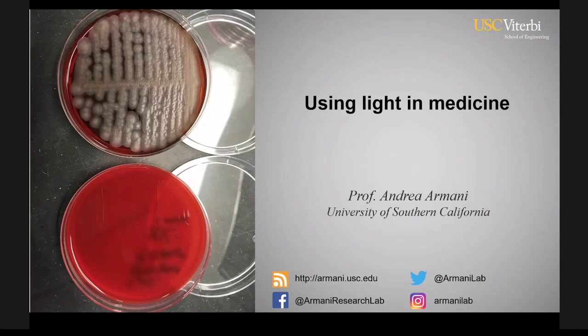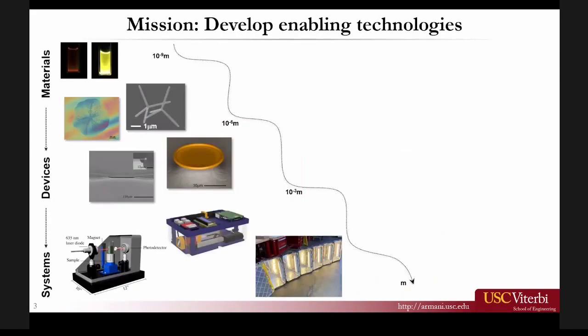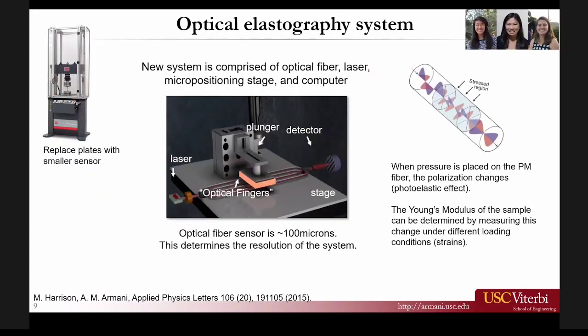The question was: does the load frame require a sample that's reasonably uniform in terms of its compressibility? We were using samples that were about a centimeter by a centimeter, by about one to two millimeters thick. They need to be reasonably uniform over the length of the optical fiber. But we're now also using pieces of tumor, and there is no such thing as reasonably uniform when you're talking about a resected piece of tumor - that's all over the place.